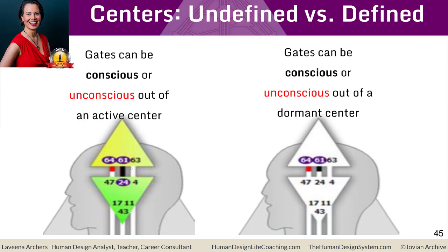Gates can be conscious or unconscious. They can be conscious or unconscious out of an active center when they're colored in, and they can be conscious or unconscious out of a dormant center when the center itself is not colored in. What is creating the colored in — the life force — is the channel: two gates, two planets in relationship to each other across the way in that same channel. We call them harmonic gates. So the 61 is harmonic to the 24, and the 24 is harmonic to the 61.